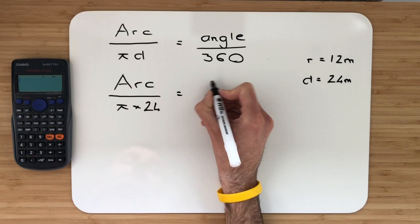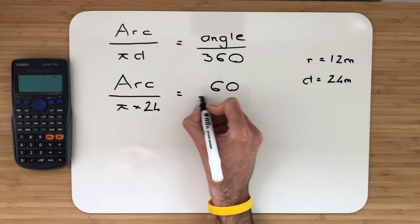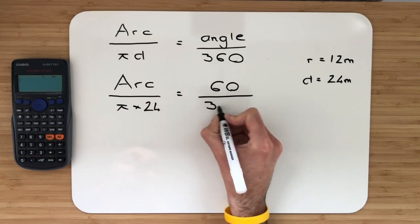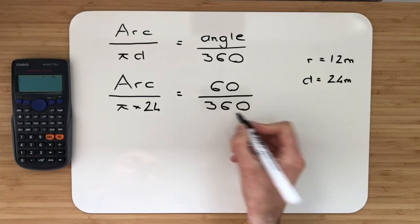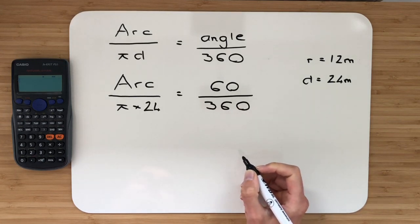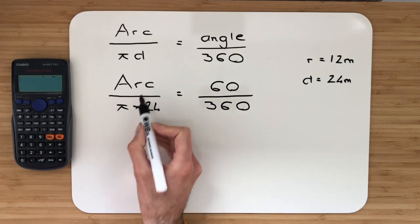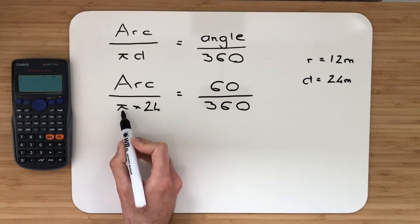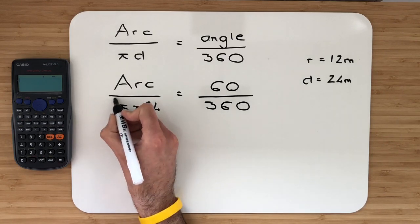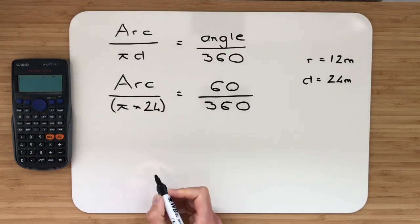My angle at the centre is 60 degrees. Remember, it's a fraction of the full entire circle, which has an angle of 360 degrees. I'm looking to calculate the length of this arc. Currently, that arc is being divided by pi multiplied by 24. I'm just going to put this inside of a bracket.